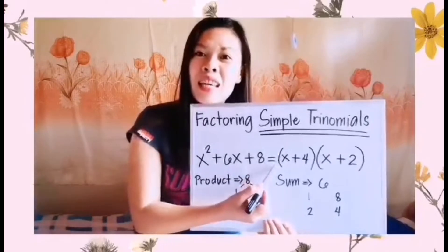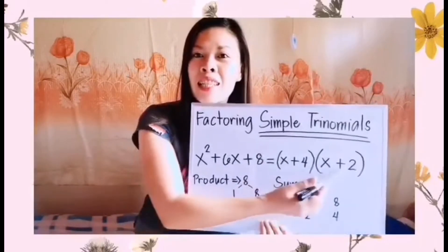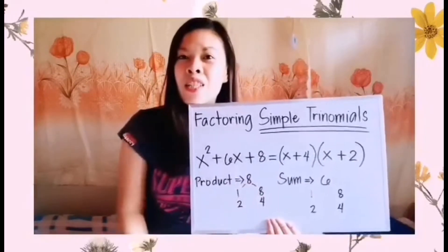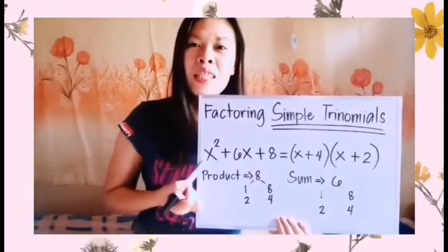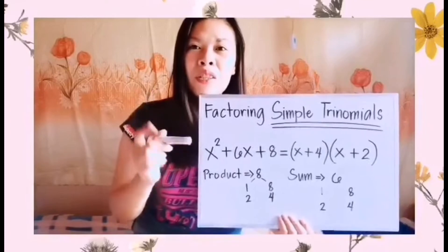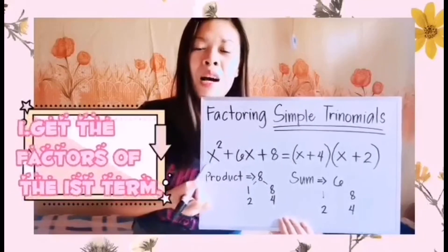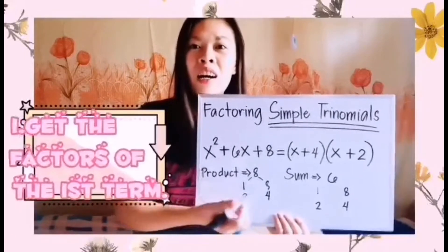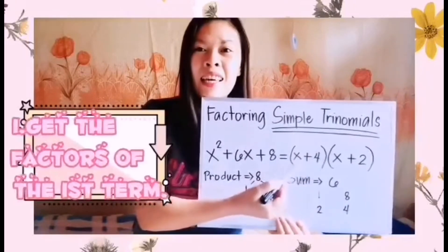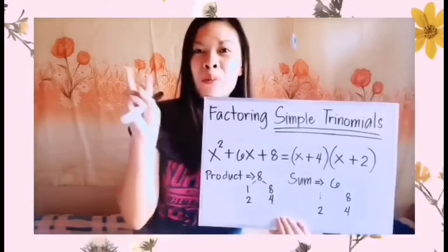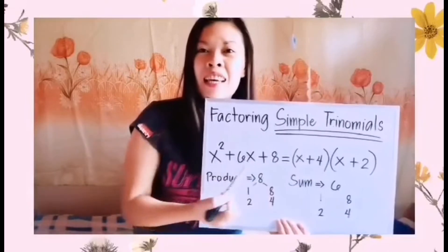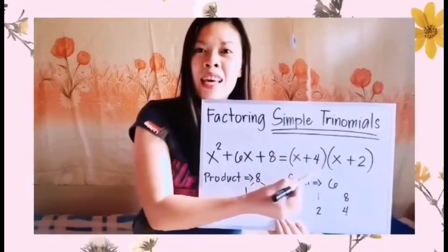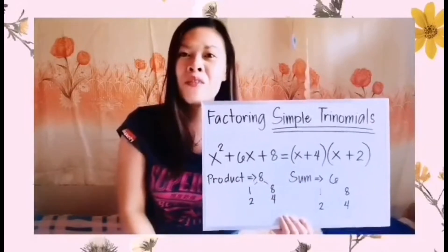How did we get these two factors? In our simple trinomial, the first thing we're going to do is consider the first term, positive x squared. Get the factors of x squared — the factors are x and x. We prepare two pairs of parentheses, then distribute the two factors: x and x.